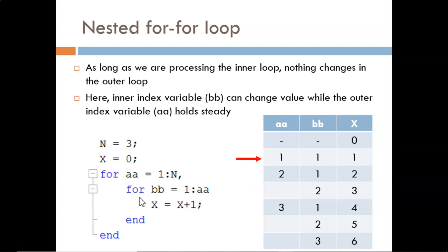The next for statement says that BB will range from 1 to 1. In other words, we will only go through this loop a single time. And at the center, X equals X plus 1, so the original 0 value gets incremented to 1.